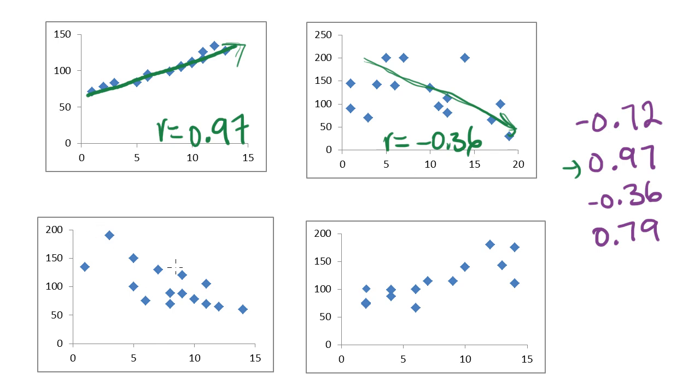What about this one over here? Again, we've got this sort of negative direction going down there, but this one's much closer to falling into a line than these ones were. So this has got a stronger relationship. It's going to be closer to negative 1. So that's this one here, negative 0.72.